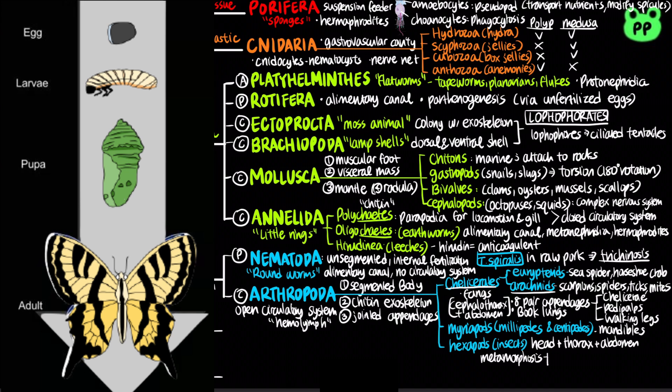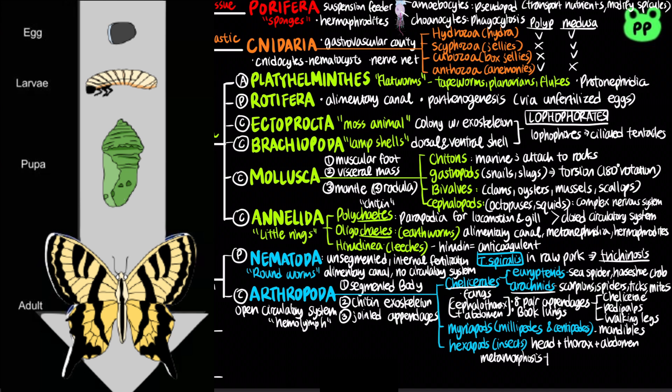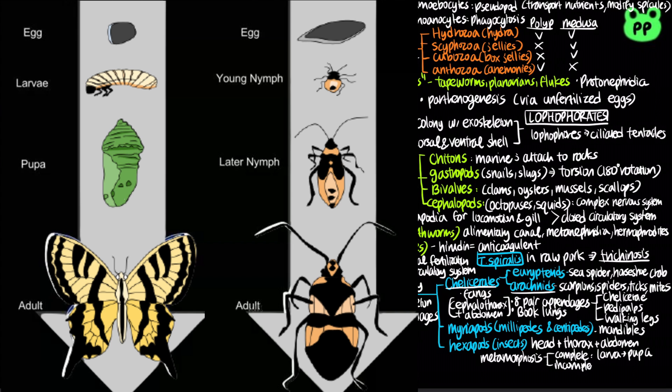Many insects undergo metamorphosis during their development. During complete metamorphosis, the larva eventually forms a pupa, from which adults that look completely different from the larva emerge. During incomplete metamorphosis, the young — called nymphs — resemble adults but are smaller and go through a series of molts until they reach full size.